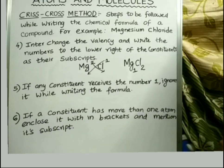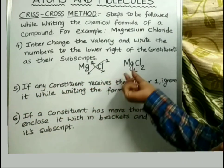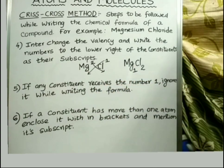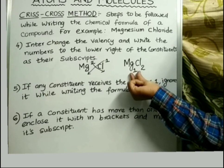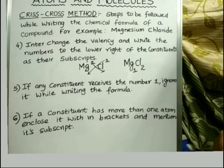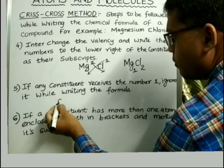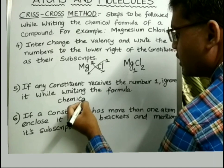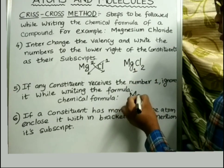Now we go to Step 5: if any constituent atom or molecule receives the number 1 as a subscript, ignore it while writing the formula. In our example, magnesium has received 1 as its subscript, so according to Step 5, the subscript 1 can be excluded. The chemical formula of magnesium chloride is written excluding the number 1 for magnesium.